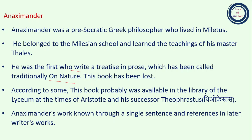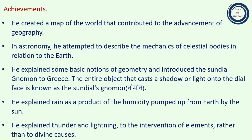Anaximander's work is known through a single sentence and references in later writers' work — similar to how we learned about Thales through writers who quoted him. Among his important achievements, he created a map of the world that contributed to the advancement of geography.